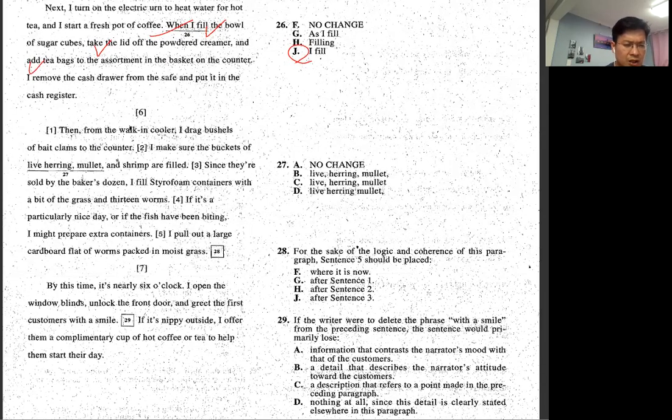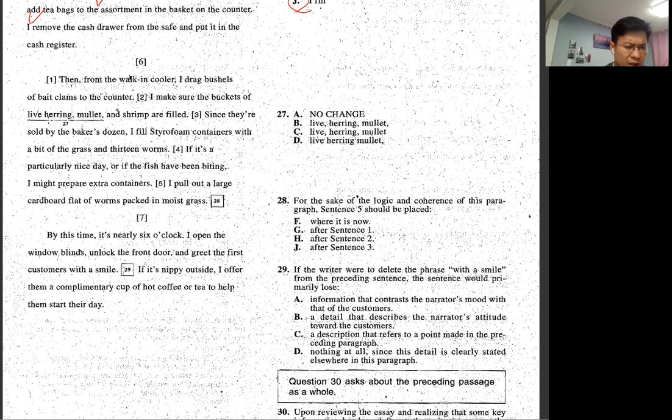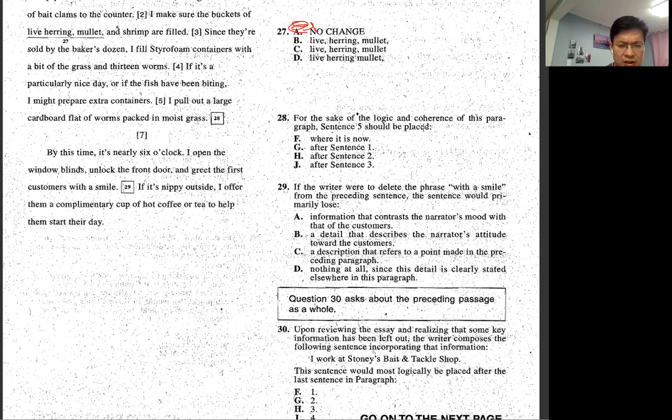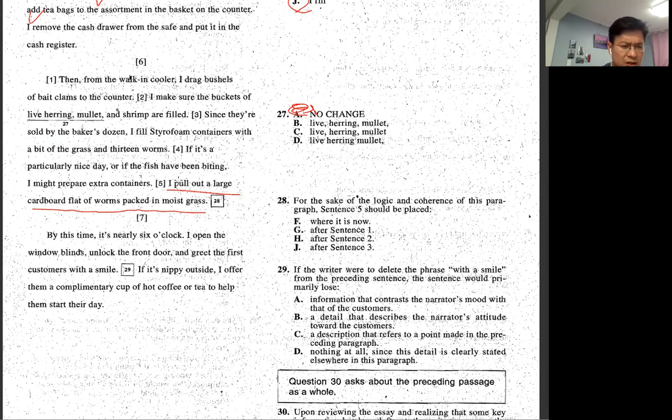And then from the walk-in cooler I drag bushels of bait claimed to the counter. And I make sure the buckets of live, live, live herring, millet, millet, live herring, millet, and shrimp. So this is like noun, noun, and noun. So it's all good. For the sake of coherence of five should be, I put out large cardboard flat of worm. So you have to relate to the bait here. So then from the walk-in cooler I drag bushels of beach came, and then pull out, and then pull out. Or make sure bucket, okay buckets of live, this build, and then pull out the cardboard. So they set up everything, so it's like after two. It's trying to visualize whatever happened.